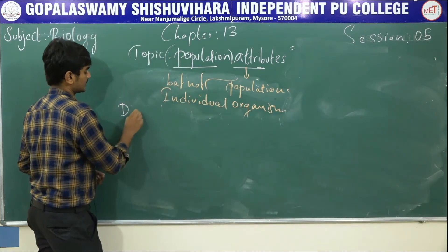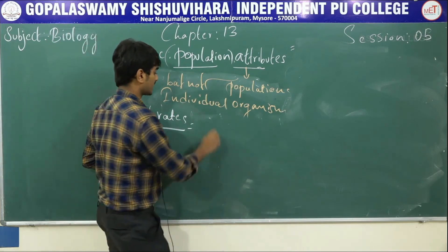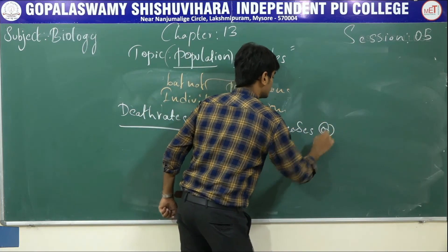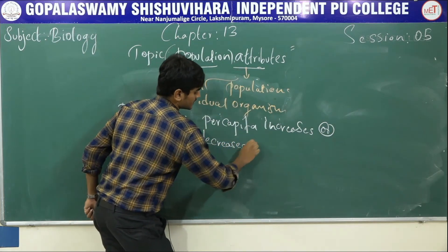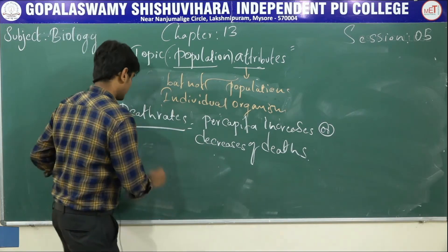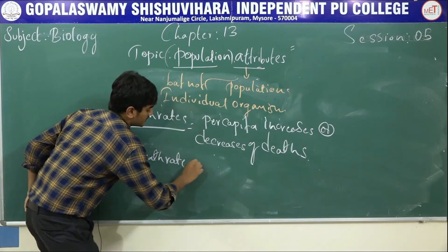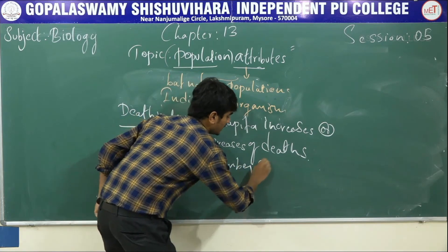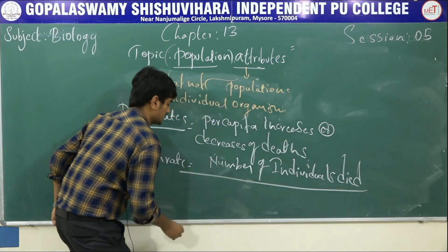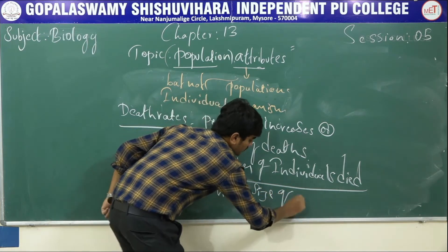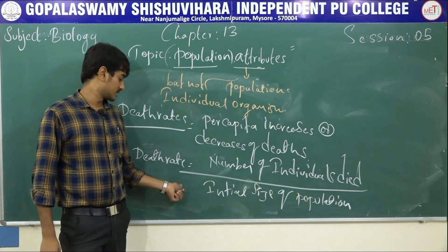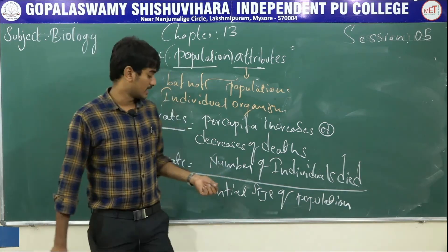Next is death rate. Per capita increases or decreases of deaths — that is called death rate. Similar to birth rate, the formula is: death rate equals number of individuals died divided by initial size of population.